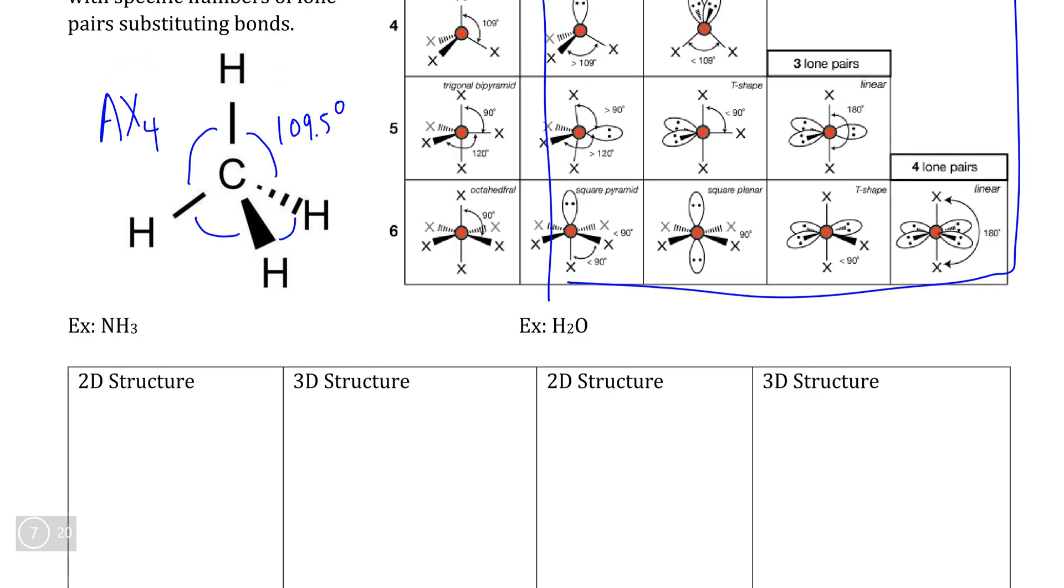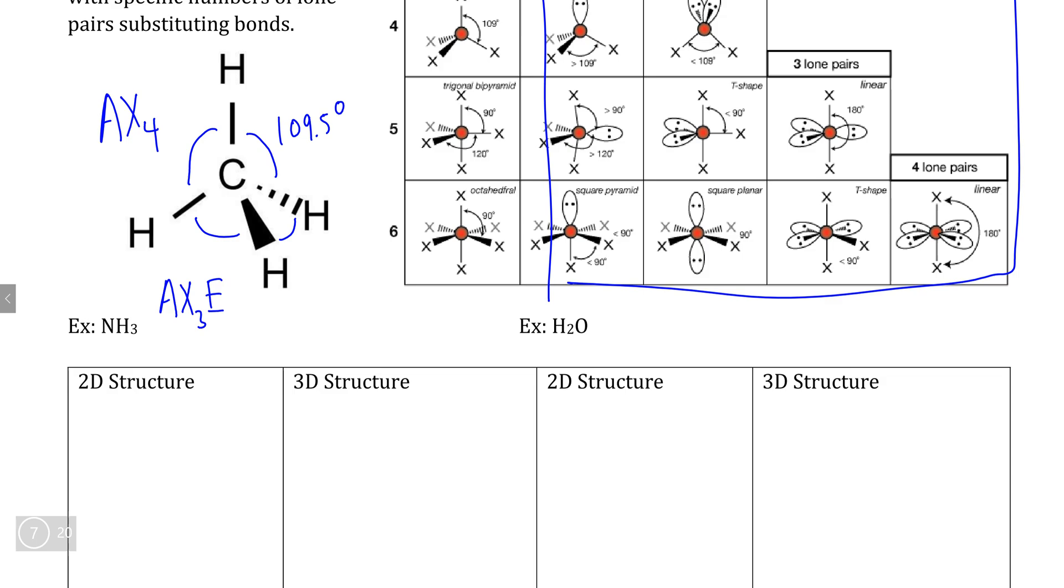Now, what we can do, let's say that we're dealing with, instead of an AX4 molecule, let's say we're dealing with an AX3E molecule. Well, basically that model would have a very similar geometry, only instead of one of the hydrogens, as in CH4, there would be a lone pair instead.